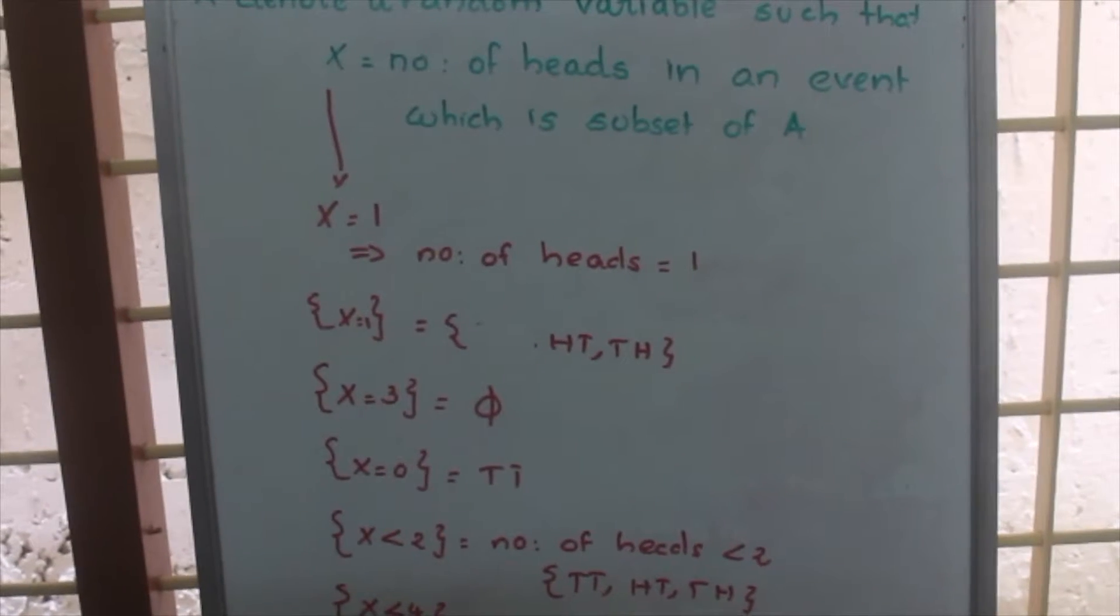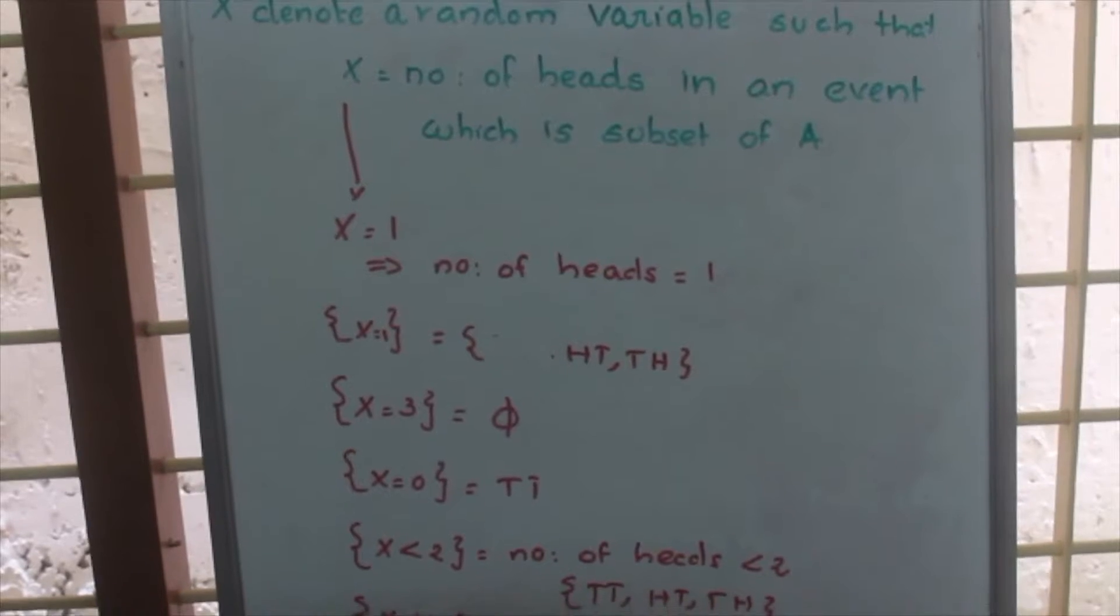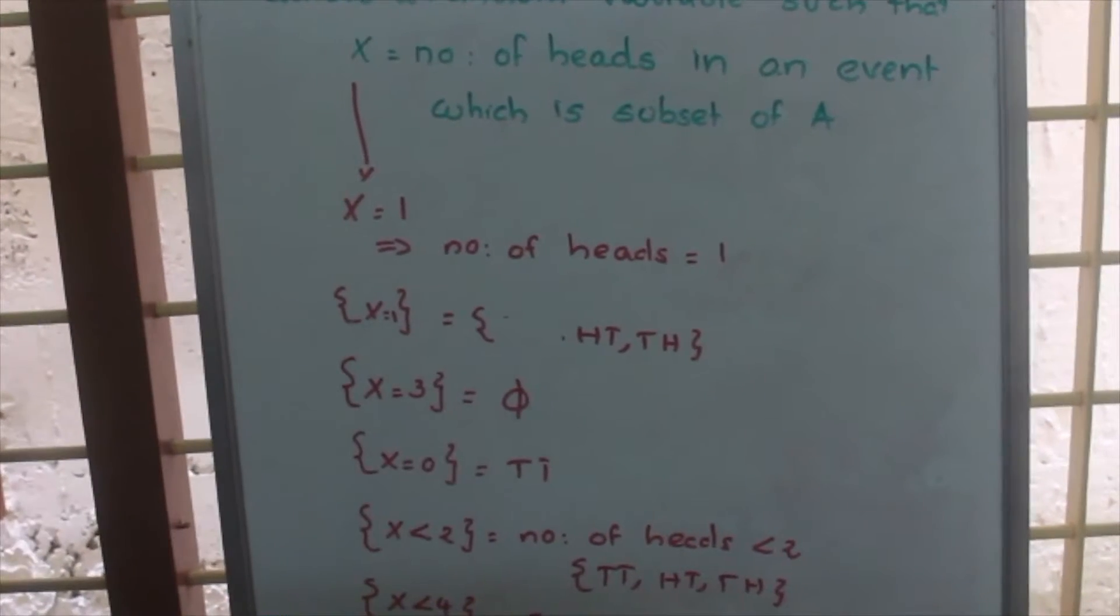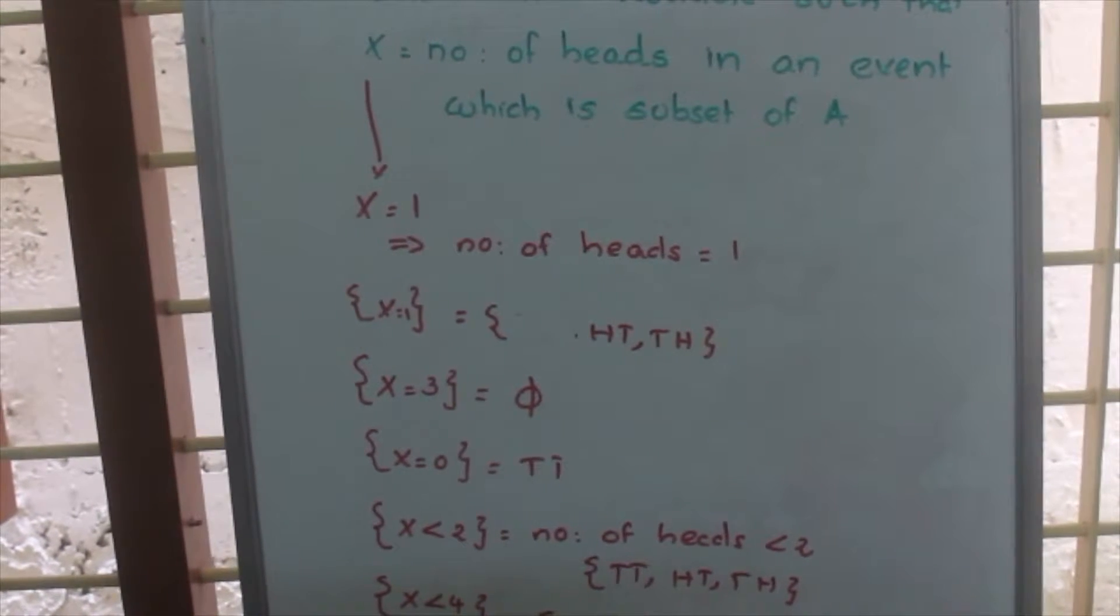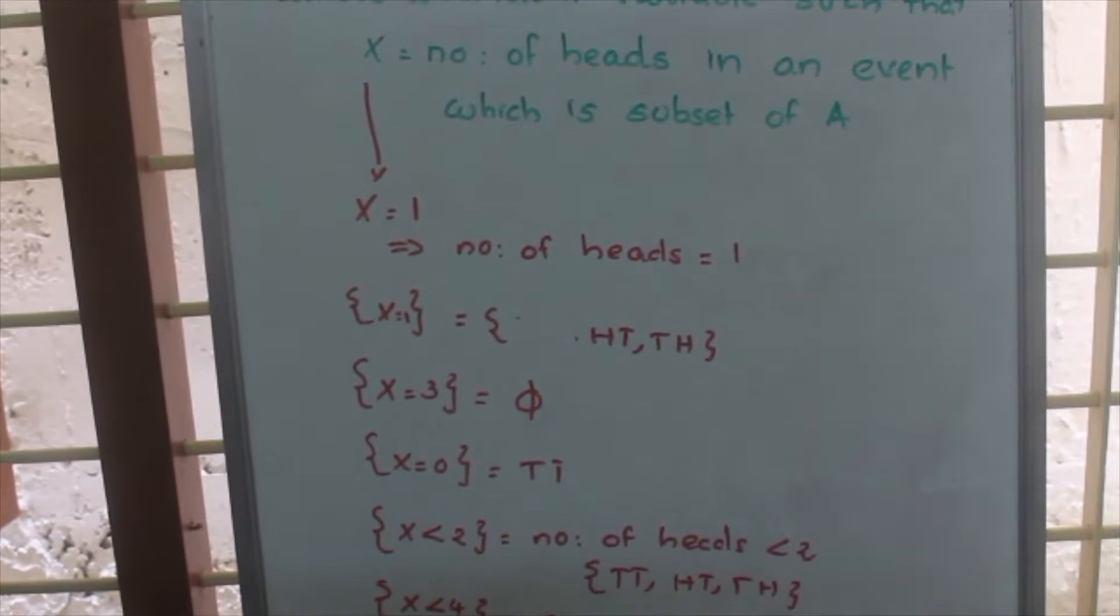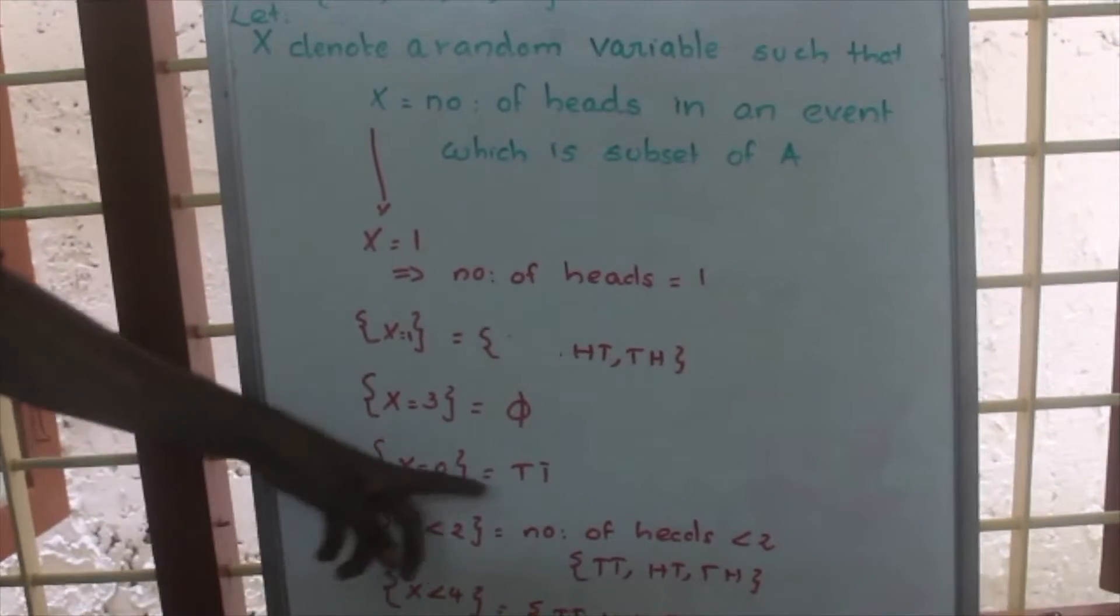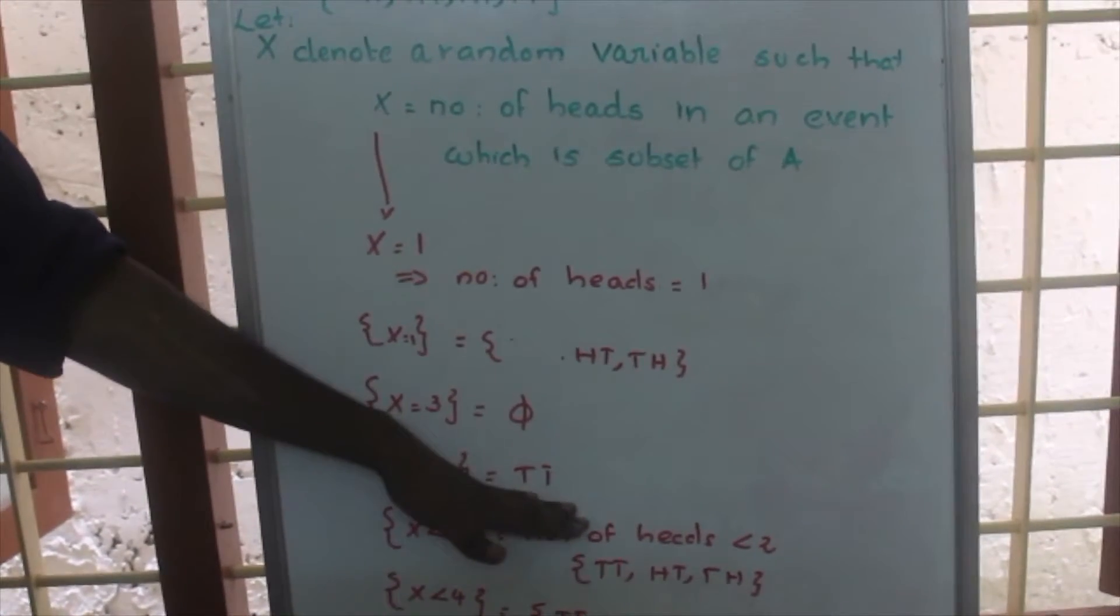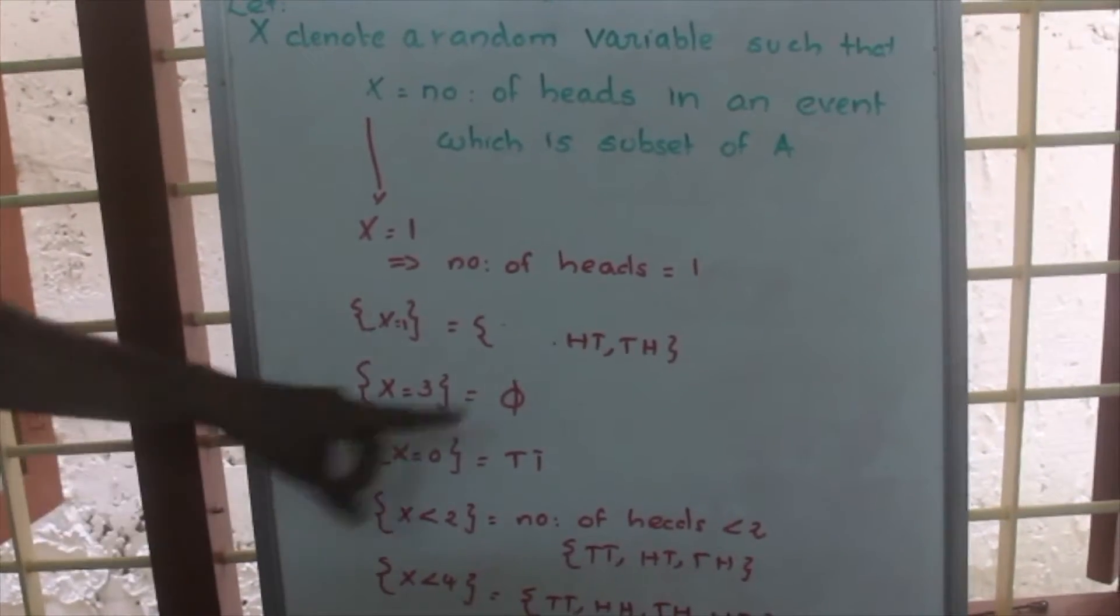For X is equal to 3 means the number of heads in the outcome is 3. There is no outcome which have 3 heads, so it is null set. Now if you are looking at X is equal to 0, X is equal to 0 means for this set, the outcome is having no heads. So that is shown by TT. The random variable X is equal to 0 denote TT.